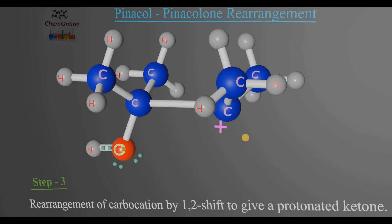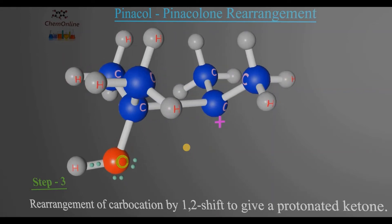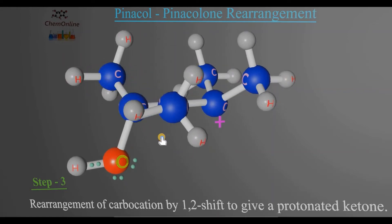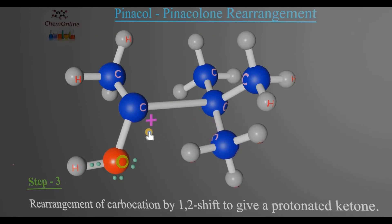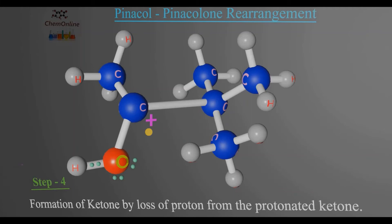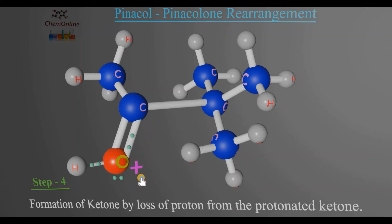In the third step, a rearrangement of the carbocation occurs by a 1,2-shift. A methyl group from the adjacent carbon migrates to the carbocation center and a new carbocation is formed. In the final step, a protonated ketone is formed — that is, C=OH⁺. This is then deprotonated: H⁺ is lost to form pinacolone, that is, a ketone.